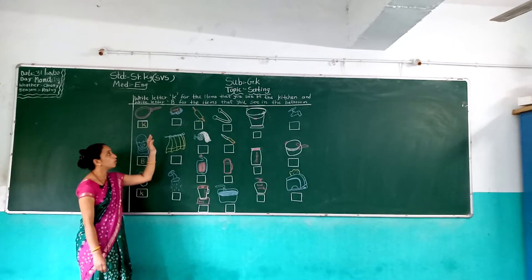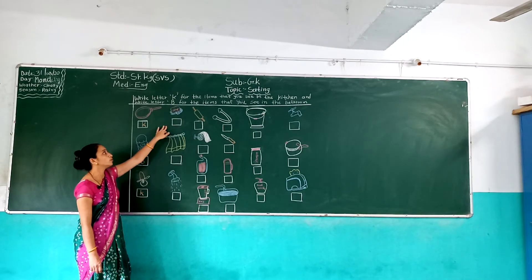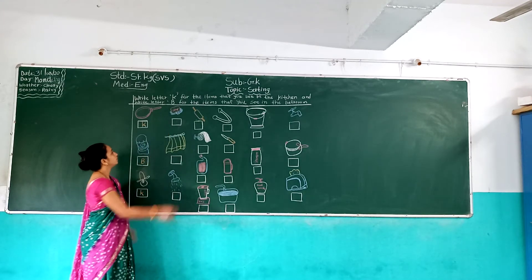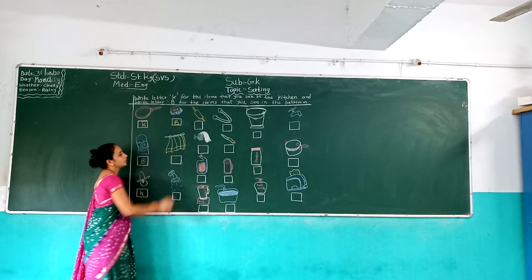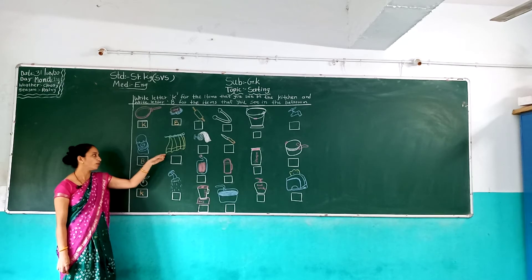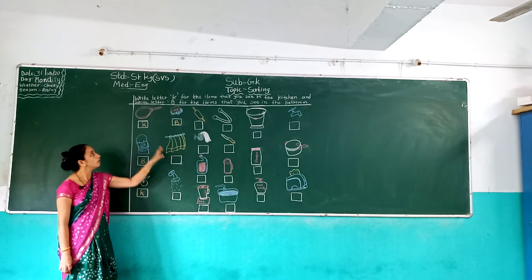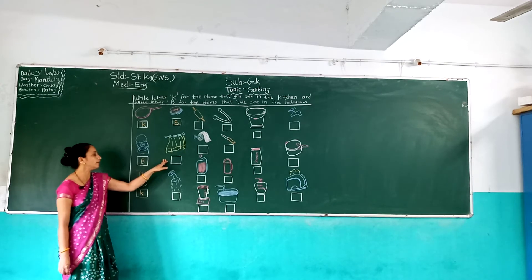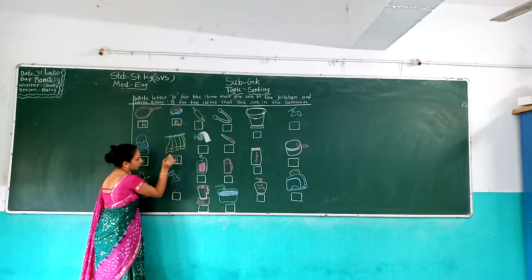And next — bathroom में use होता है तो हमें bathroom item है, उसमें कौनसा letter use करना है? B letter use करना है. So right here B. And next, towel. Which picture is this? Towel — towel हम bathroom में use करते हैं न, तो हमें यहाँ कौनसा letter use करना है? B letter use करना है. So right here B.